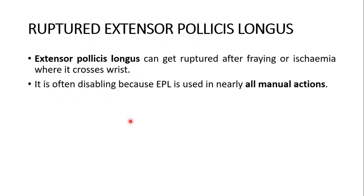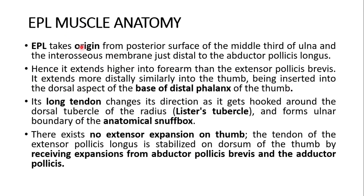So what is a ruptured extensor pollicis longus? It can get ruptured after fraying or ischemia where it crosses the wrist. It is often disabling because the extensor pollicis longus is used in nearly all manual actions. The extensor pollicis longus takes origin from the posterior surface of the middle side of the ulna and the interosseous membrane, just distal to the abductor pollicis longus, hence it extends higher into the forearm than the extensor pollicis brevis. It extends more distally into the thumb, being inserted into the dorsal aspect of the base of the distal phalanx of the thumb.